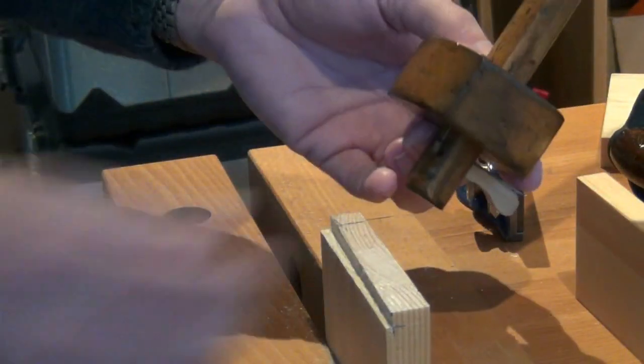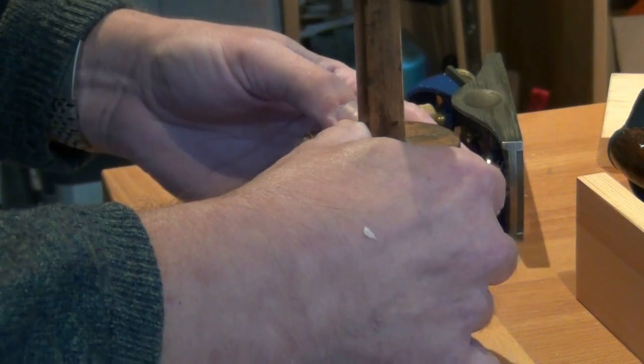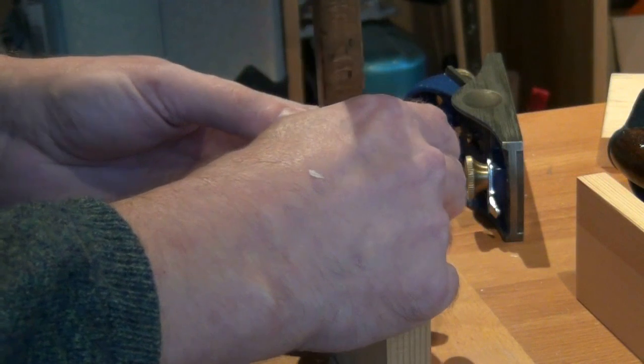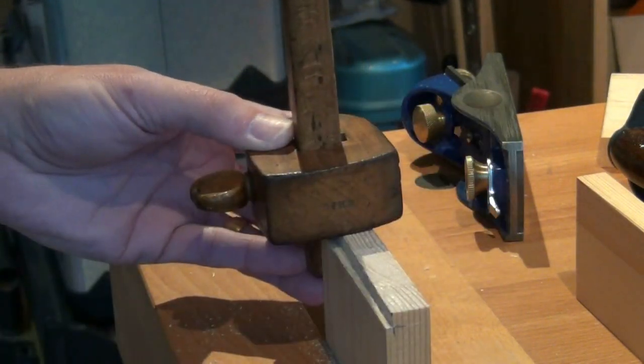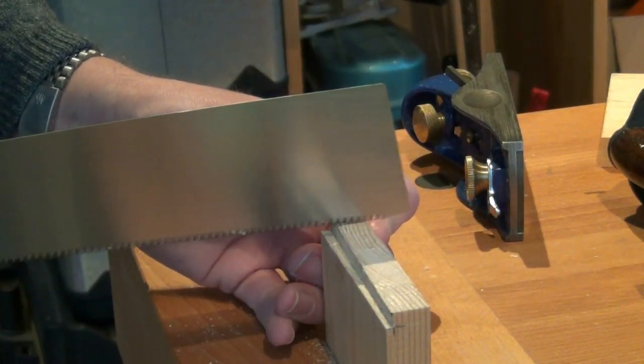Use the marking gauge to mark around the end that's going to be removed and saw down to the shoulder line.